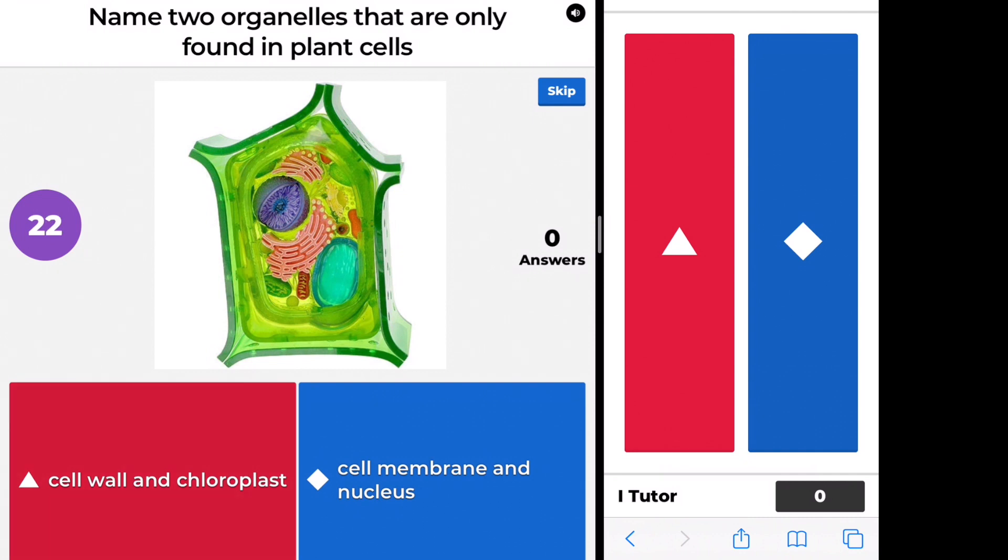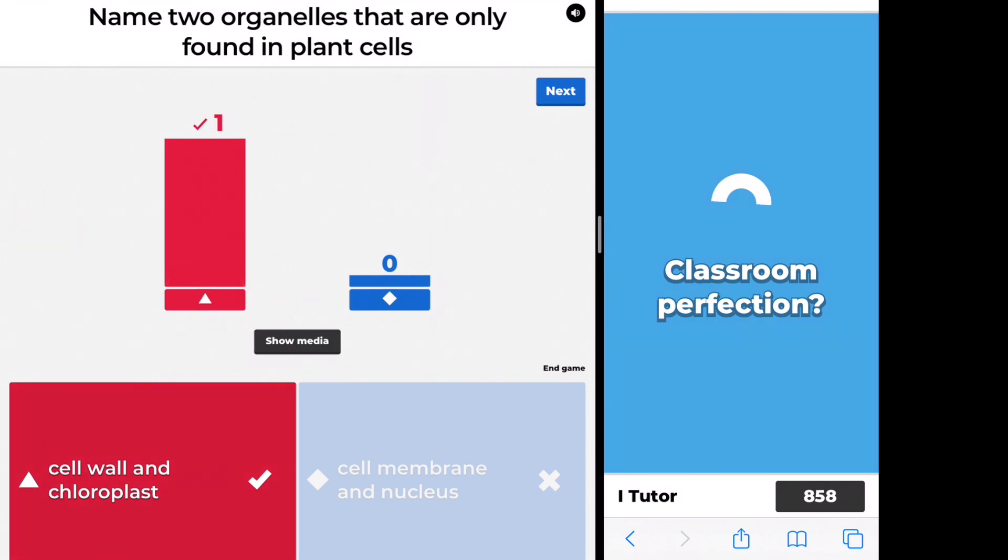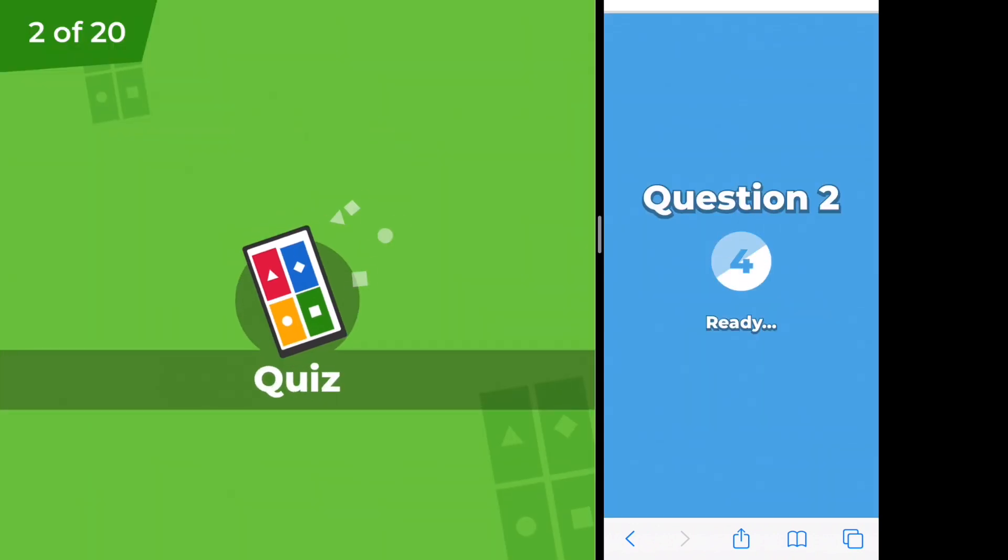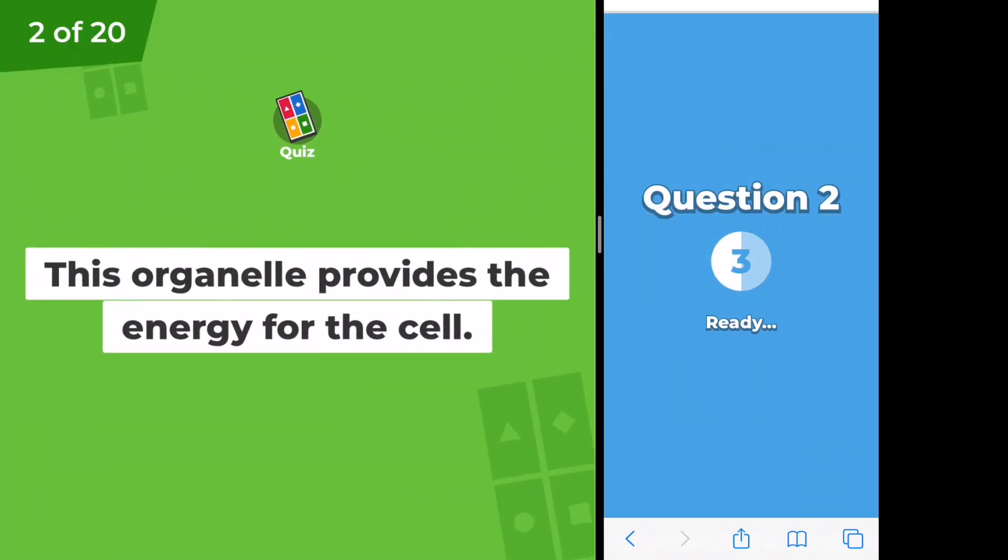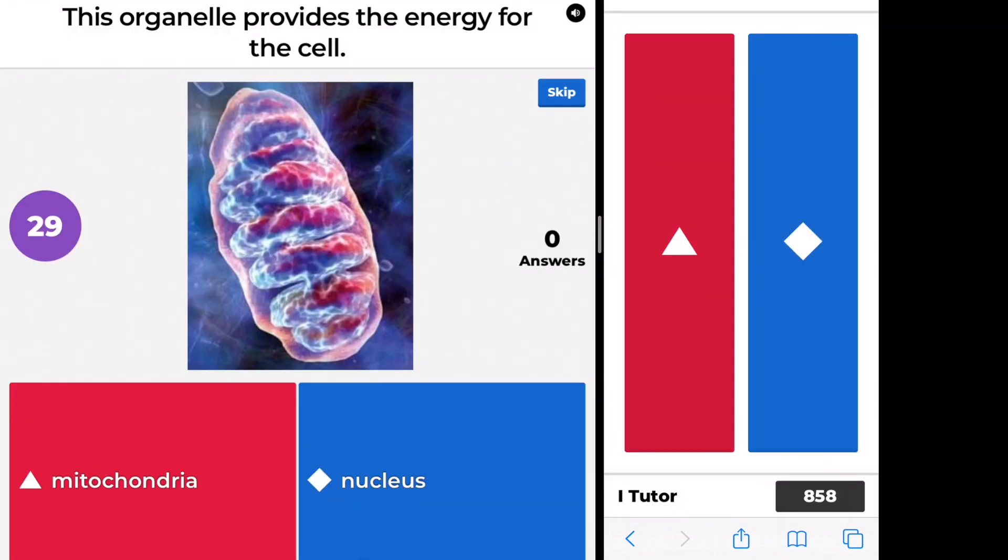Splitting their iPad screen is an easy way for students to participate in Kahoot! without having two devices. If they had two devices, they wouldn't have to split their screen. They could stay in the Zoom meeting with their iPad and go to Kahoot! and enter the game code with a second device, like a phone or a computer.